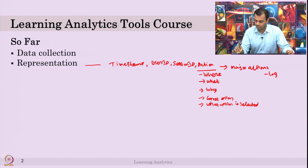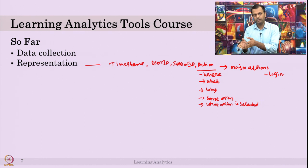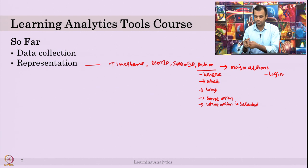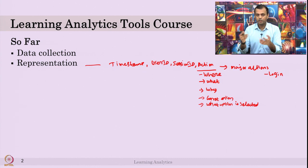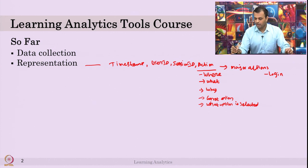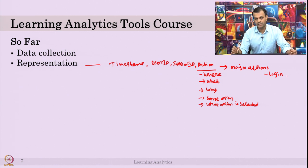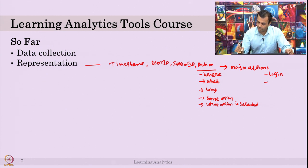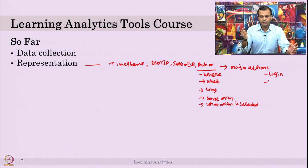You might consider login — logging into a system or system responses — as the start of the action. Login is important just to know when it started. Login is associated with the session ID, and by login data you can construct features like how many times the login happened in a week, in a day, or within hours, and how long they spent on average each login time.